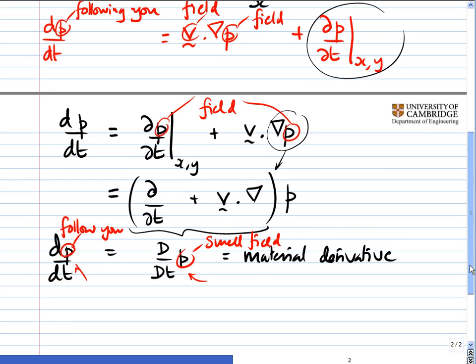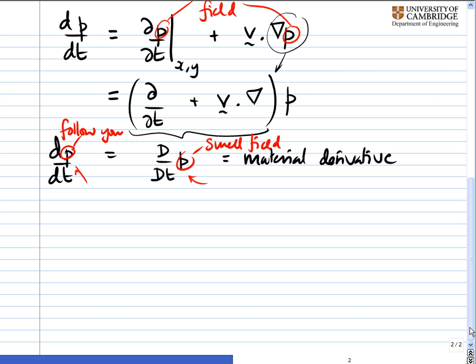Now why is this useful? Well, it's useful because this concept, the material derivative, can be applied to anything, not just to smells. For example, if you wanted to look at the temperature, the change in temperature T, following a fluid particle, and you have the temperature field, it's quite simply exactly the same thing as DT by Dt, big D T by dt, where this is the temperature field.